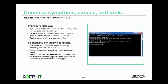Now let's talk about improper shutdown. The symptom is that the PC shut down with no warning once, but can reboot with no problem. The cause is most likely just a glitch, a momentary power issue, or the end user doesn't understand the importance of proper shutdown. If it's a glitch, there are no tools needed. If it's the end user, end user education usually solves that problem.